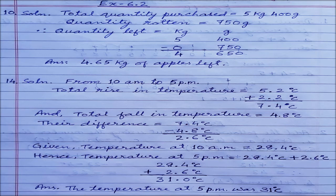Students of Class 6, today let's see question number 10 and 14 of Exercise 6.2. I have shown you the solution for both questions. Question number 10 reads as: Rahul purchased 5 kg and 400 grams of apples.